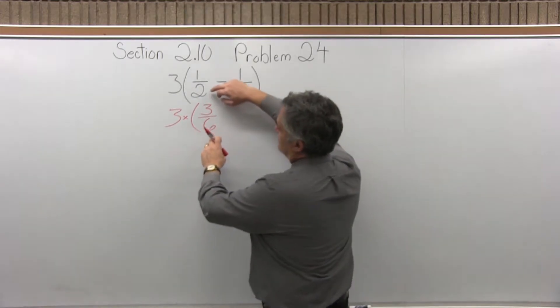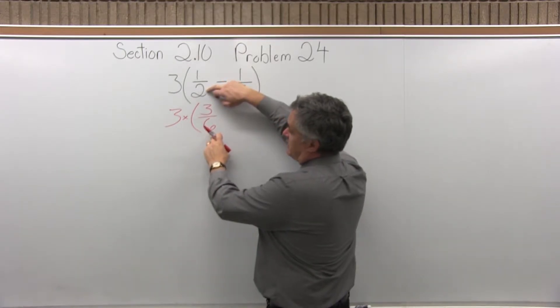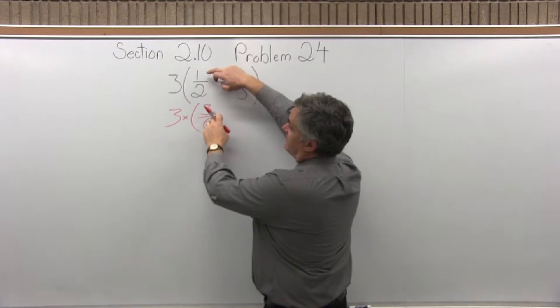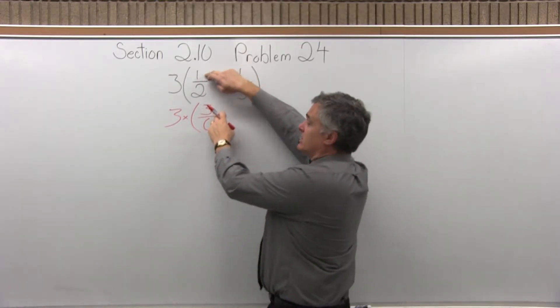And again, what I did is I was looking at the denominator of two, and I said I want to make it a six. Two times what becomes a six? Two times three. So I have to multiply the numerator times the same value. One times that same three made three, and it is equivalent to one-half.